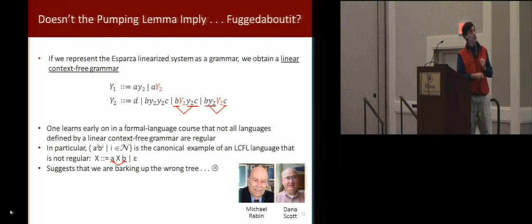So if you think about this in just grammar theoretic terms, writing these symbols down from the equation as if they were grammar rules, what we've got is something very similar to the kinds of grammars where you have that produce languages like A to the I, B to the I. That's simply this grammar here, X goes to A, X, B, or Epsilon.